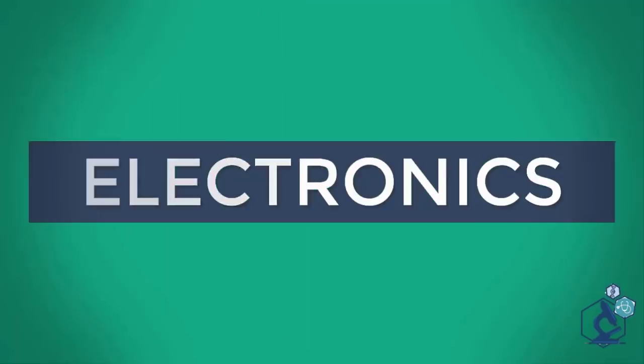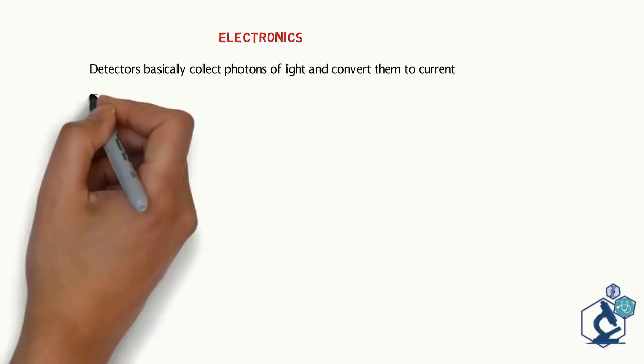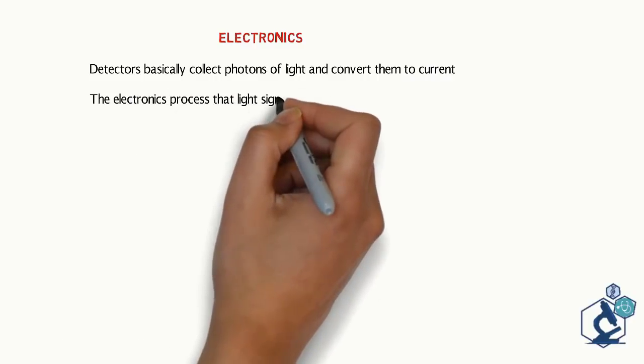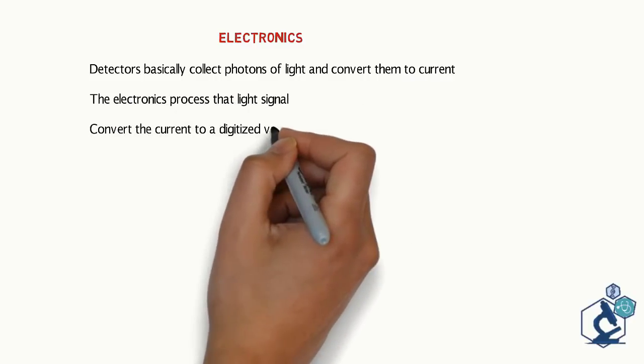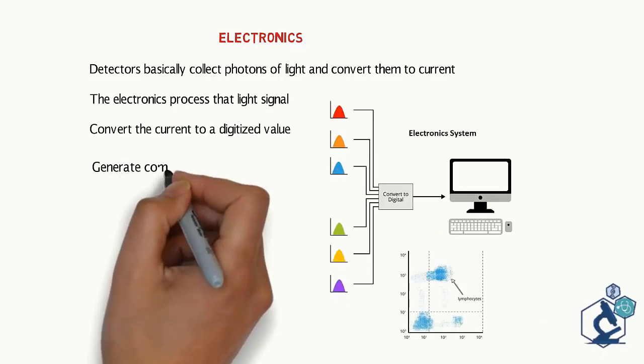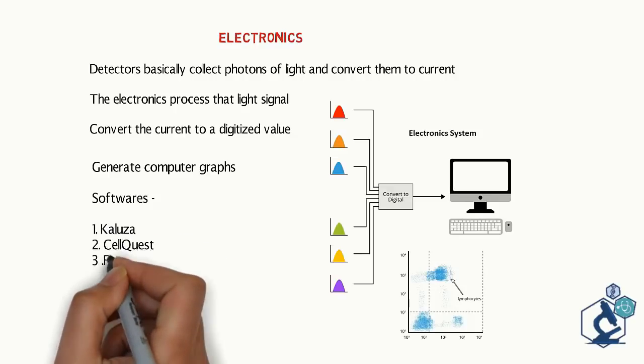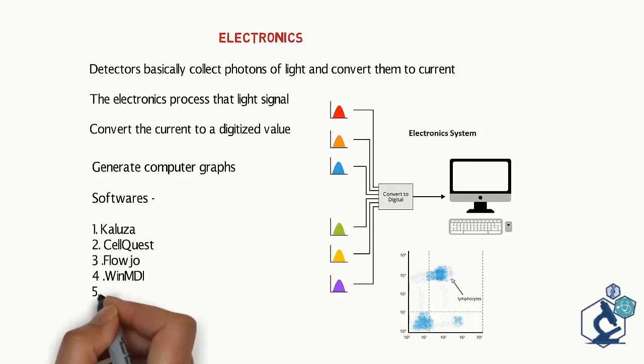Electronics. Detectors basically collect photons of light and convert them to current. The electronics must process these light signals and convert the current to a digitalized value that the computer can represent as a graph. Various software such as Kaluza, CellQuest, FlowJo, WinMDI, FCS Express, etc. aid in analysis of these flow cytometry files.